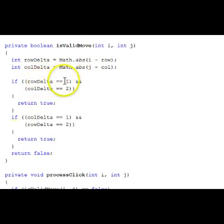And if the row difference is 1, and the column difference is 2, that's one of those L's of a 2 and a 1, then we return true, that it is a valid move.